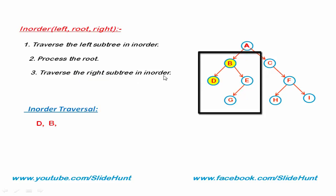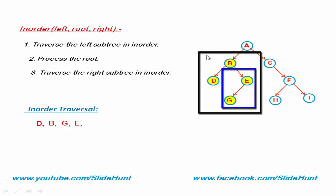Traverse the right subtree in in-order. The right subtree of B is this part. Apply these three steps. Traverse the left subtree in in-order — the left subtree of E is G. Traverse the left subtree of G — G has no left subtree. Next step: process the root — G is traversed. G has no right subtree, so go back to E. The left subtree of G is traversed. Now we traverse the root node, which is E. You can see here the left subtree of A is processed.